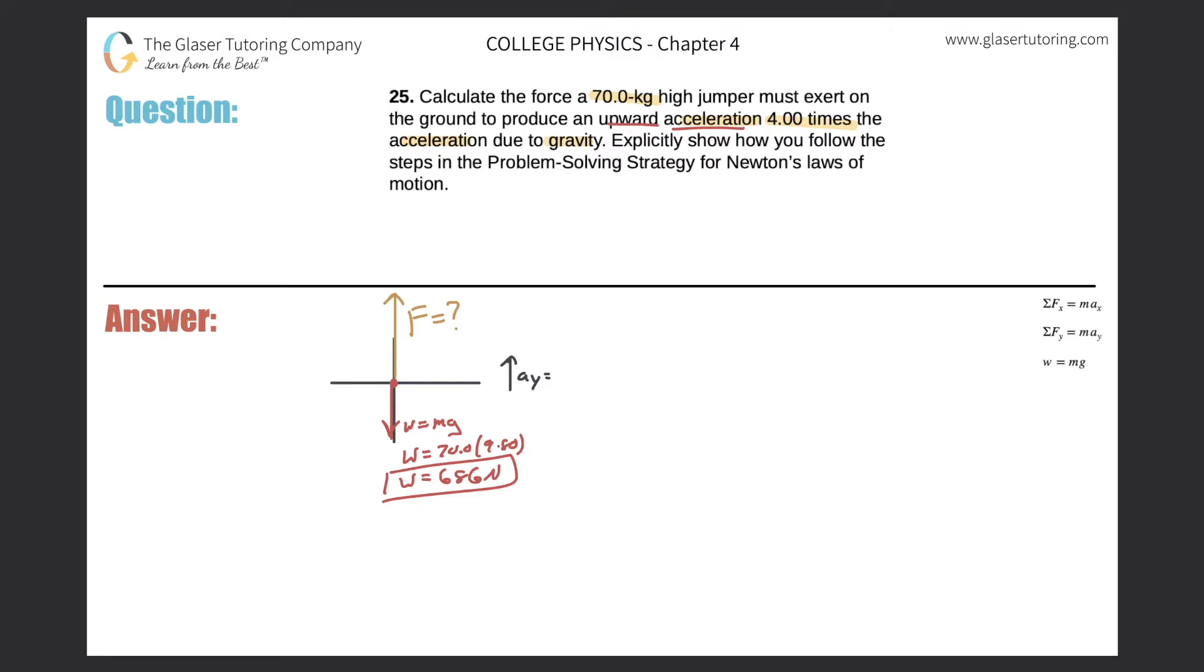It says the upward acceleration four times the acceleration due to gravity. So I actually do know this acceleration. The acceleration is going to be four times gravity. Simple enough. So the acceleration that this jumper wants to experience is going to be four times 9.8. In other words, 39.2 meters per second squared. So I know the acceleration.